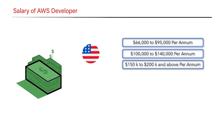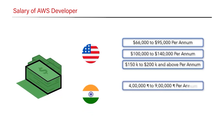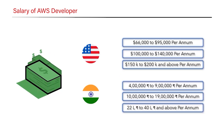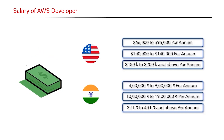If you're working with these companies in India, beginners can expect salaries ranging from 4 lakh to 9 lakh rupees per annum. Intermediate candidates with one to two years of experience can expect 10 lakhs to 19 lakhs per annum. Advanced-level candidates with three to four or more years of experience can expect 40 lakhs and above, based on experience, company, and project.